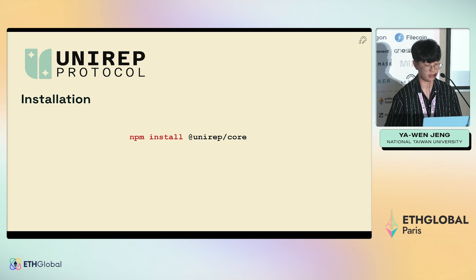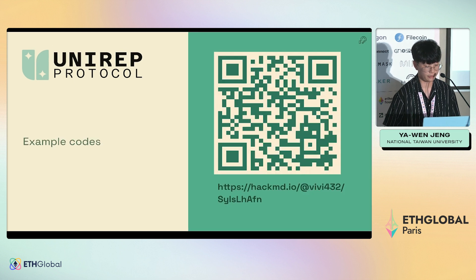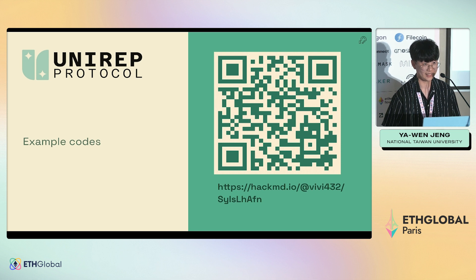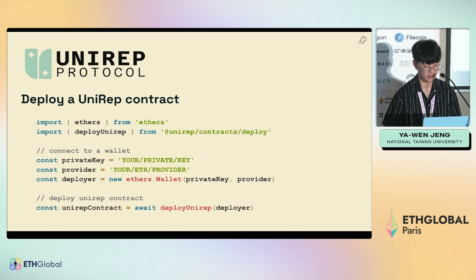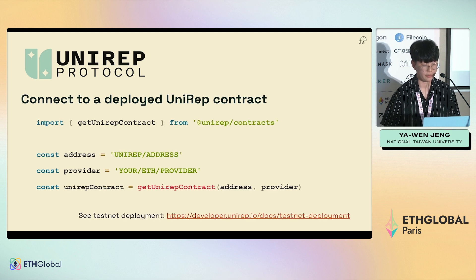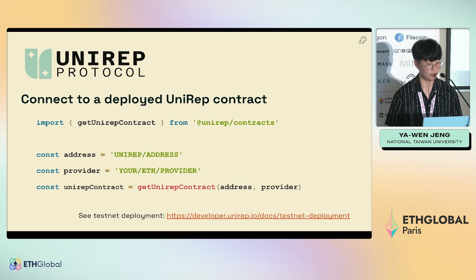To install the UNIREP package, use 'npm install unirep core'. To deploy a UNIREP contract, use the deploy unirep function from the contract package — you connect your wallet and call the deploy unirep smart contract. If you want to connect to a deployed UNIREP contract, you provide an address and the provider or your wallet.